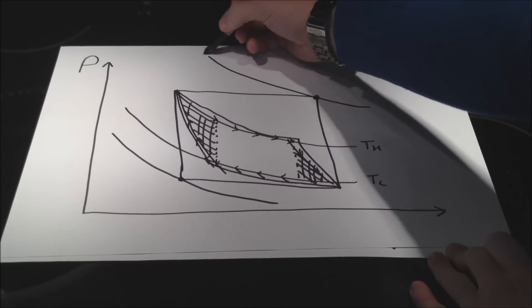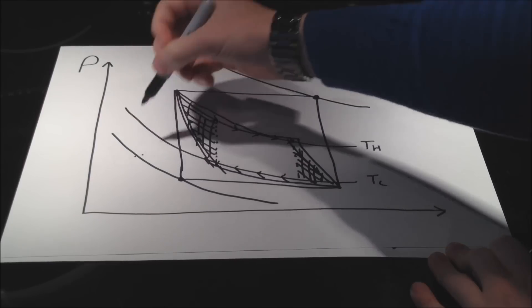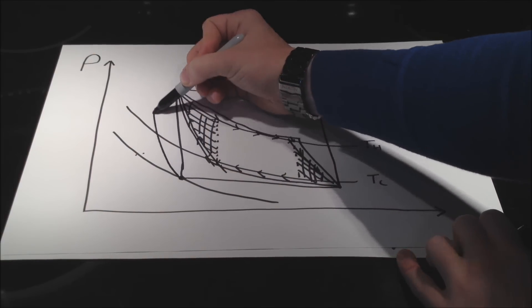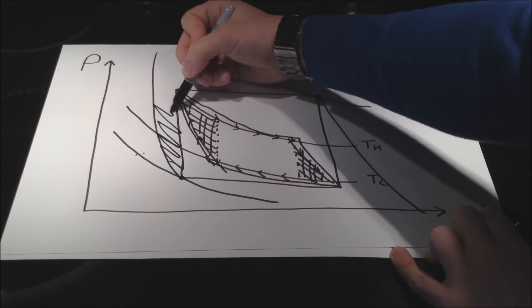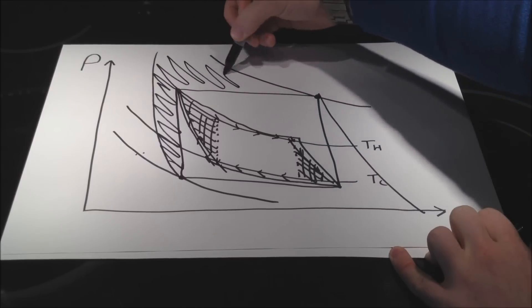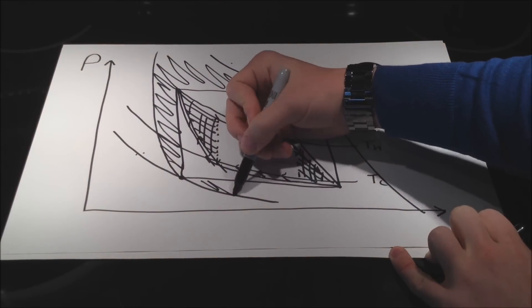if we're operating between this larger thermal gradient out here, I could once again use adiabatic processes to include even more cycle area, which I am shading in right now.